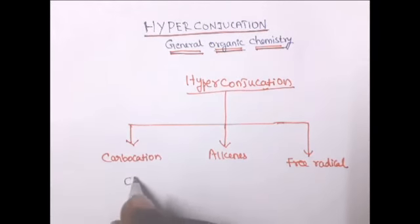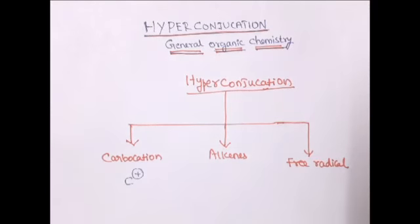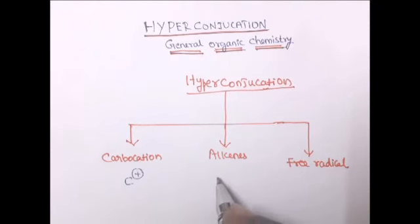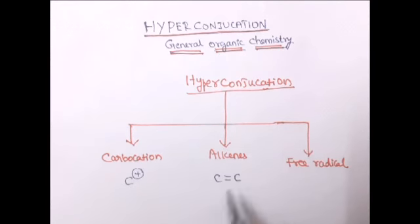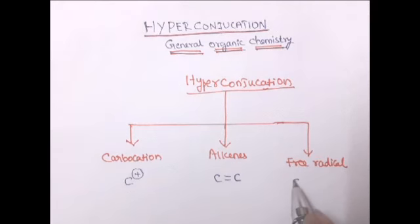Carbocation is the one having a Carbon with a plus charge. Alkenes have a double bond between two Carbon atoms. Free Radicals have a Carbon with a single electron.